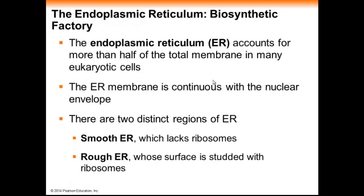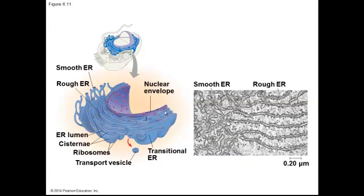The endoplasmic reticulum accounts for approximately half of the total membrane structure in many eukaryotic cells, and it is also continuous with the nuclear envelope, meaning the ER comes off of the nuclear envelope. There are two distinct regions of the ER: the smooth ER, which lacks ribosomes, and the rough ER, which contains ribosomes. Notice the smooth ER does not have that rough appearance, whereas the rough ER contains ribosomes and has a rough appearance. The double bilayer of the nuclear envelope extends into the ER, which is why we say the ER is continuous with the nuclear envelope.